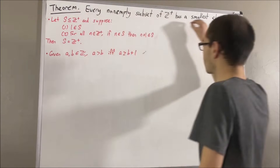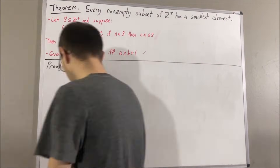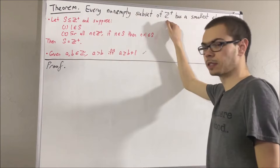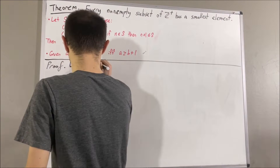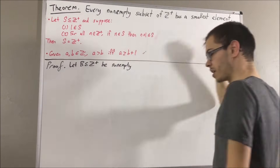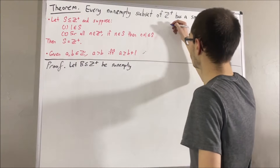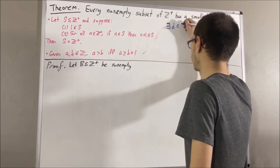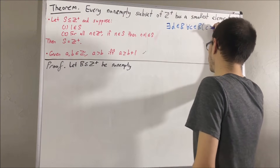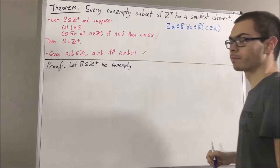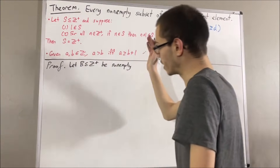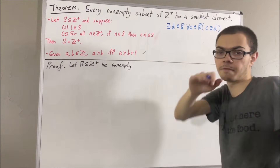So now let's get into proving this theorem. To start on the proof, let's give ourselves an arbitrary non-empty subset of positive integers — I'll call it B. The whole goal is to show that B has a smallest element. In other words, we want to show that there exists an element d in B such that for all c in B, c is greater than or equal to d. And to prove that B has a smallest element, assume for a contradiction we instead have that B does not have a smallest element.